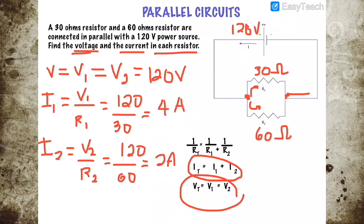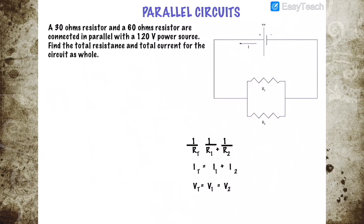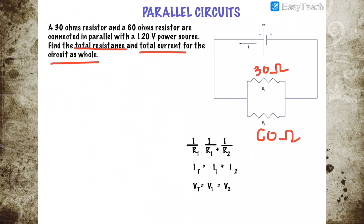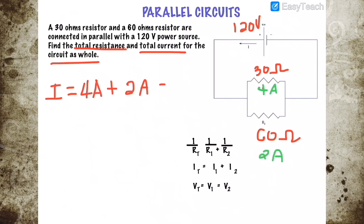Therefore, the current passing through the first branch is 4 amperes and through the second branch is 2 amperes. The second part of the question is to find the total resistance and total current for the circuit. The first resistor is 30 ohms, the second is 60 ohms, and the voltage is 120 volts. The total current is I total equals 4 amperes plus 2 amperes, which is 6 amperes.